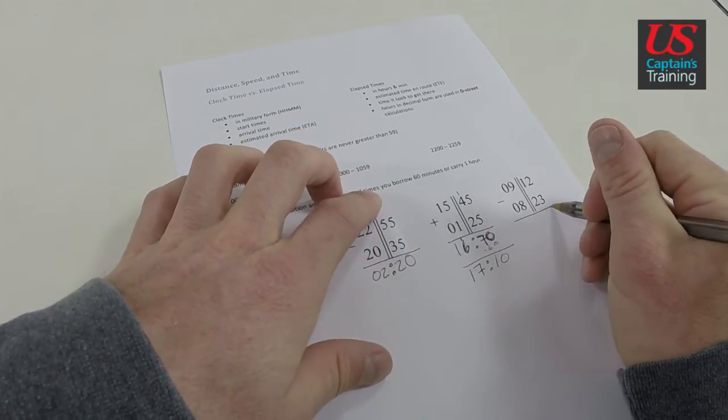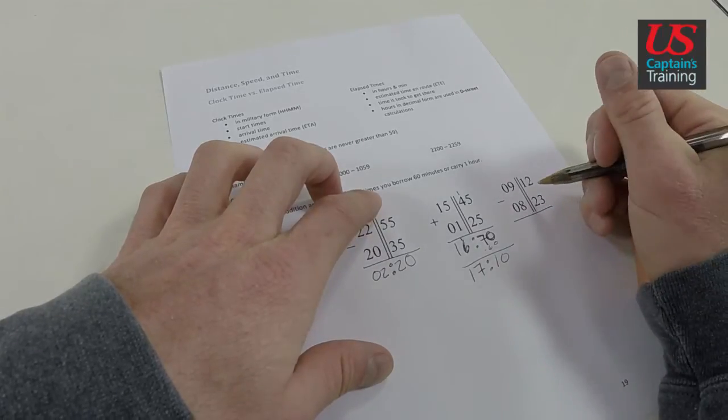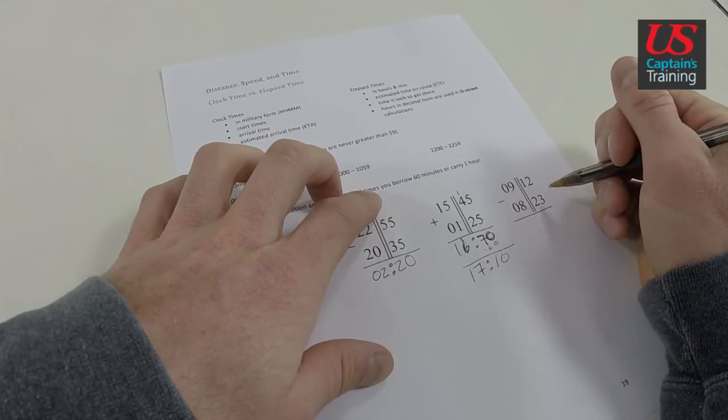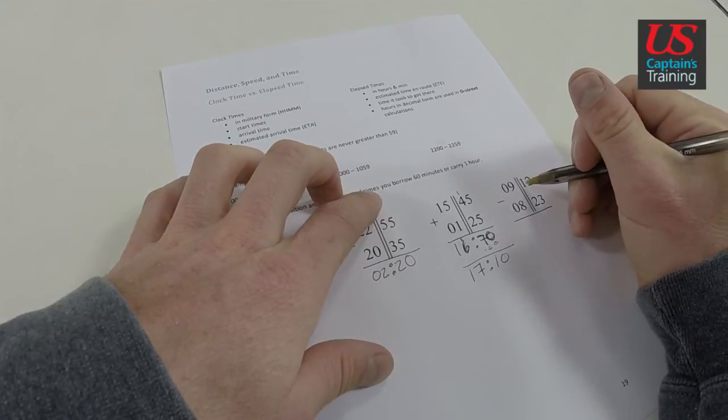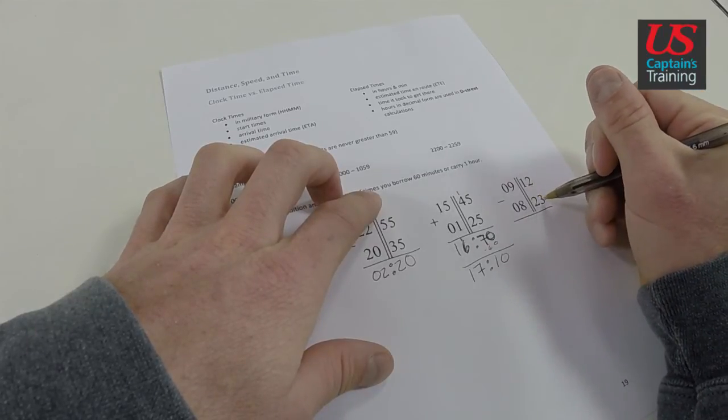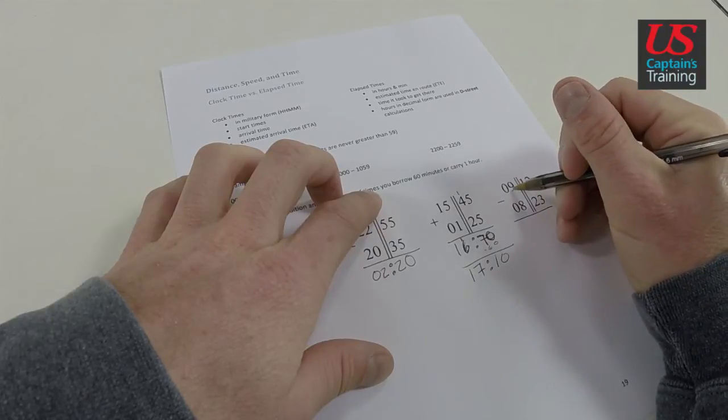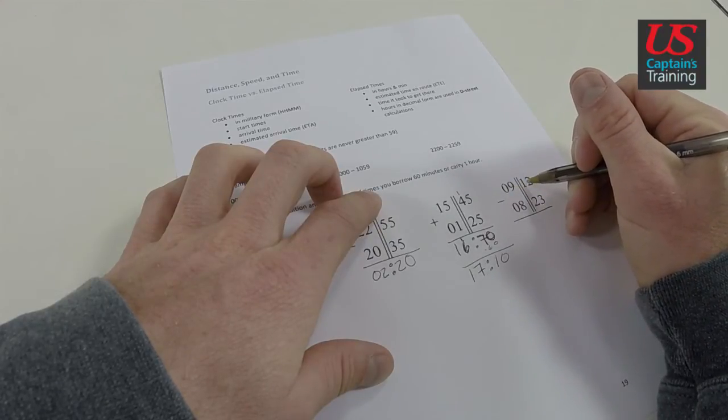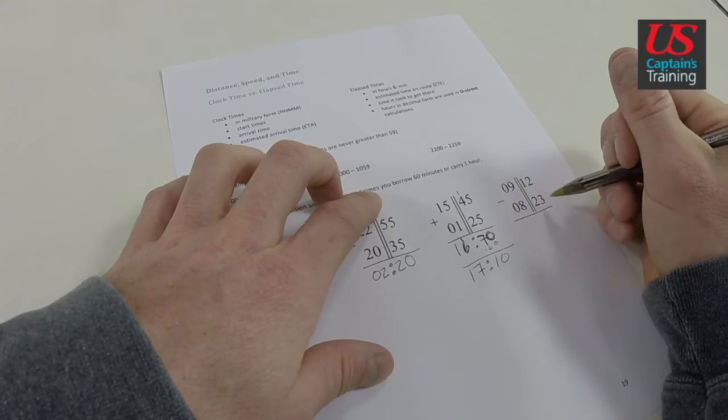And this subtraction problem is the same thing, but in reverse. We have 912 minus 823. So this 12 minutes minus 23, we need to borrow from over here and add 60 minutes. But let's do something first.